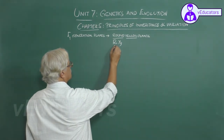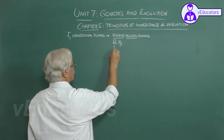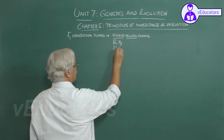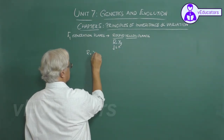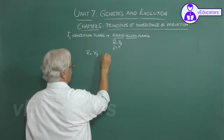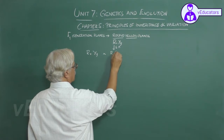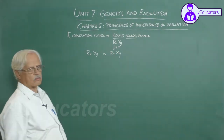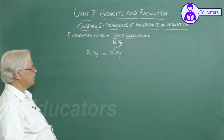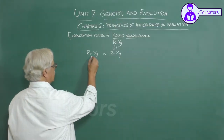He allowed these plants to undergo self-pollination. So, RrYy crossed with RrYy. As we have seen earlier, four types of gametes are possible.